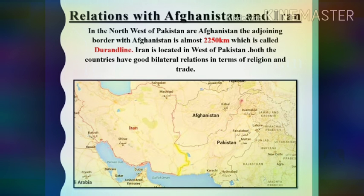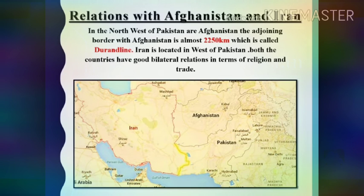We share a long border with Afghanistan, almost 2250 kilometers, called the Durand Line. Iran is located in the west of Pakistan. Both countries have good bilateral relations in terms of religion and trade. Afghanistan and Iran are both Muslim states, which is why Pakistan has very good religious relations with these countries. We also have trade relations with Afghanistan and Iran.